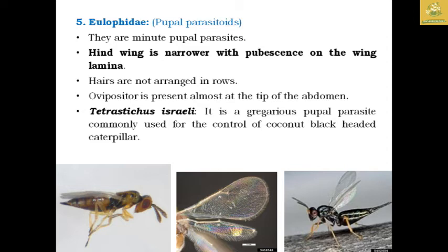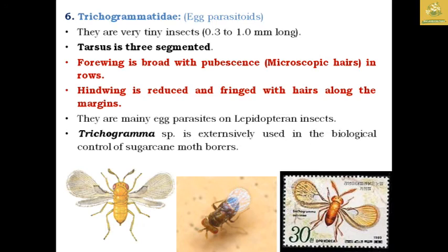The family Trichogrammatidae are known as egg parasitoids. They are very tiny insects with a size of 0.3 to 1 mm. The tarsus is three-segmented. The forewings are broader than hind wings with setae arranged in rows, and the hind wing is reduced and fringed with hairs along the margins. Trichogramma species are extensively used for biological control of sugarcane stemborer in sugarcane fields and are mainly egg parasitoids on lepidopteran insects.